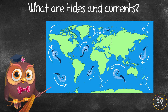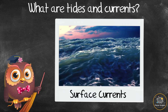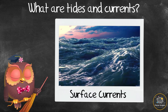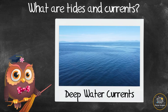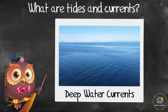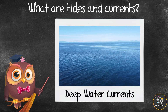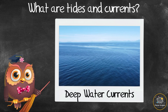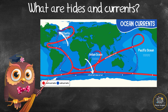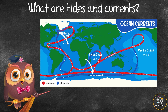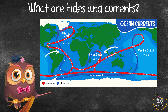Ocean water moves around the Earth constantly in definite patterns called currents. Surface currents are caused by wind blowing across the surface of the water, creating waves. Deep water currents are caused by temperature changes, salt levels, gravity, and density. These currents are warm or cold and affect the Earth's climate.